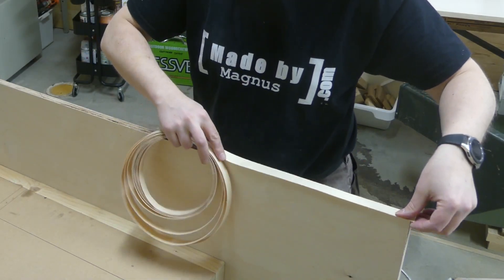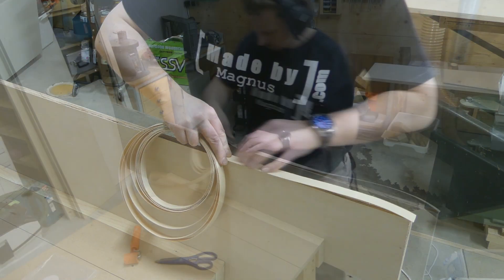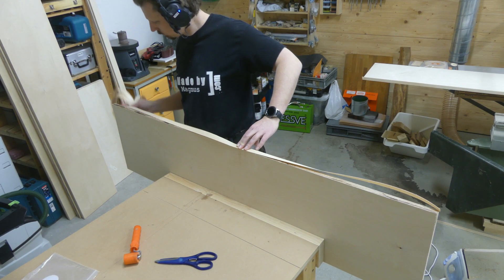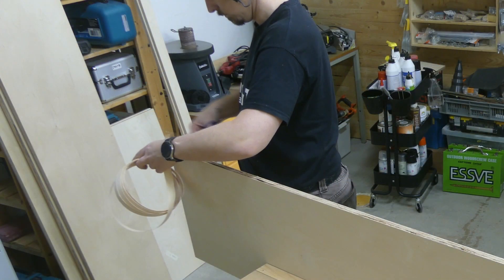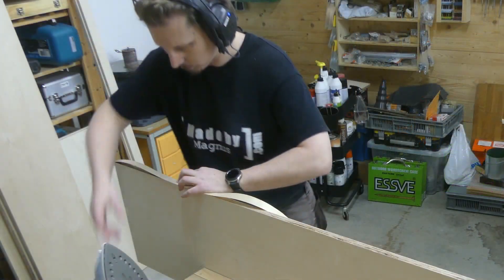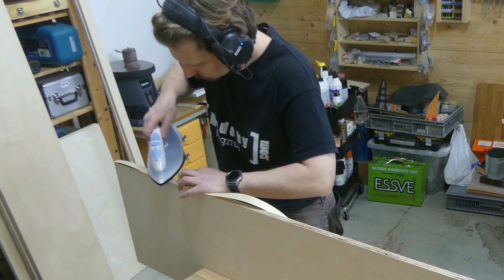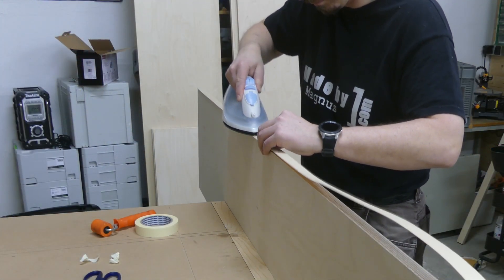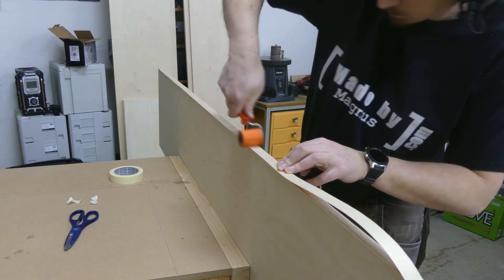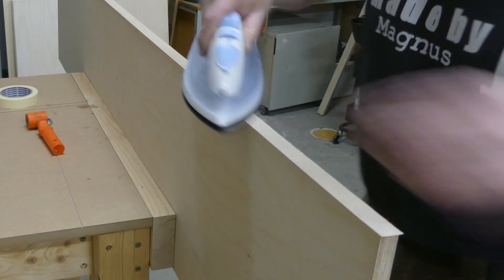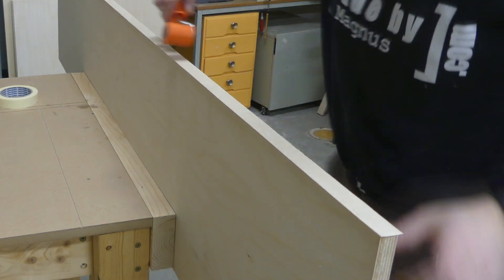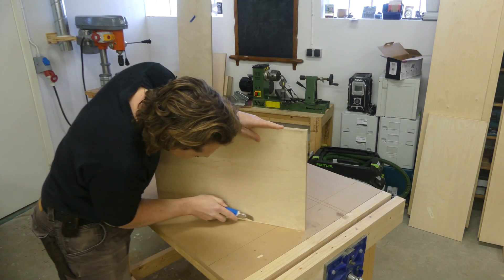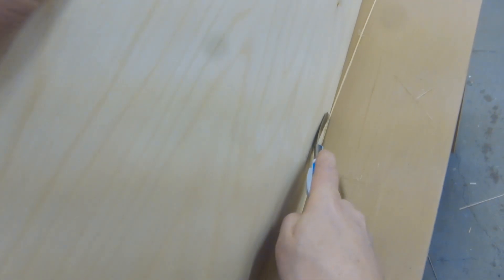When all the pieces had their correct dimensions I started to edge band all the edges that were going to be visible. This was a pretty straightforward process due to the pre-glued edge banding, and I used an ordinary iron and a small roller to apply some pressure. When the pieces had cooled and the glue was dry it was just to remove the excess edge banding with a sharp knife.